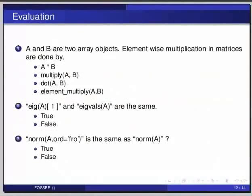Now here are some self-assessment questions for you to solve. First one: A and B are two array objects. Element-wise multiplication in matrices is done by — option 1: A star B, option 2: multiply(A, B), option 3: dot(A, B), option 4: element_multiply(A, B). The second question is: eig(A)[0] and eigvals(A) are the same — true or false? The third question is: norm(A, ord='fro') is the same as norm(A) — true or false?